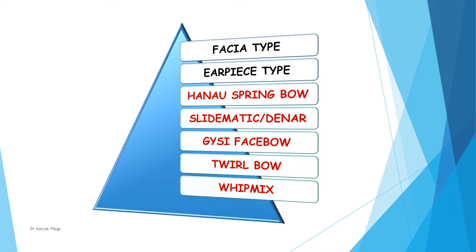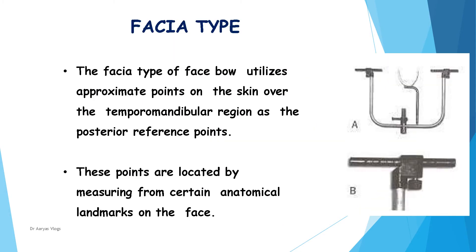Under arbitrary facebow there are main types: fascia and earpiece type. The fascia type of facebow utilizes the approximate points on the skin over the temporomandibular region as posterior reference points. These points are located by measuring from certain anatomic landmarks on the face.